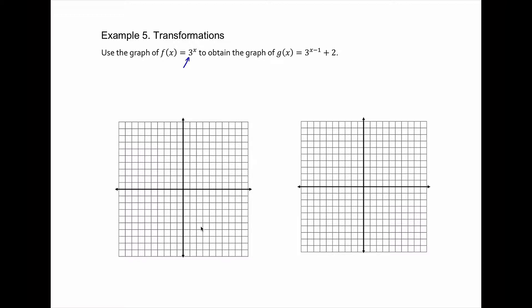So first, our original function, we have a base 3. And if we were to use 3 points to graph this, a good candidate would be just negative 1. And in general, it'll be 1 over the base, just because the negative causes the base to go to the denominator, so this is 1 third.